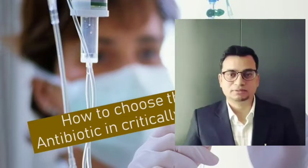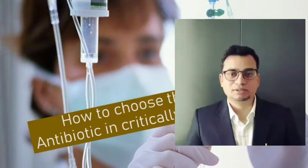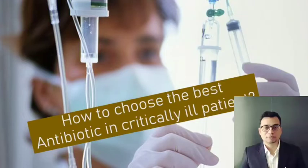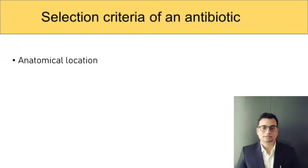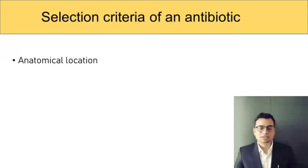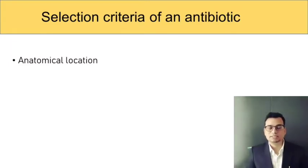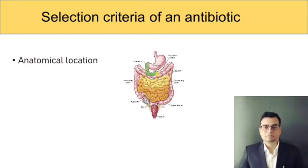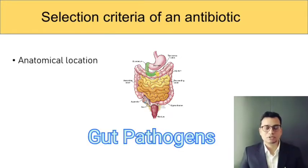There are five criteria. The first and foremost criteria is the anatomical location. If a patient is suffering from diarrhea, for example, the anatomical location of infection is the intestine. The antibiotic choice will depend upon the gut pathogens such as Salmonella typhi or Clostridium difficile.